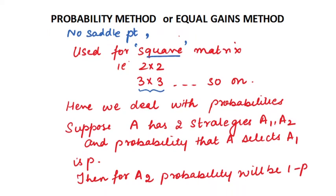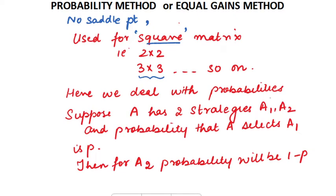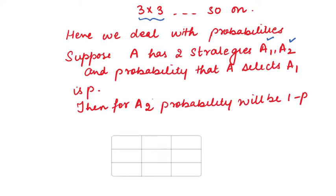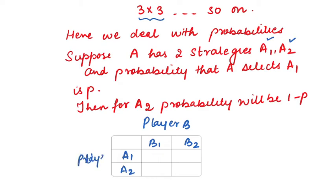Let us suppose it is a mixed strategy. Player A has two strategies A1 and A2, and player B has two strategies B1 and B2. So both players have two strategies each. Let us say the inside contents of the 2x2 payoff matrix are A, B, C, and D.